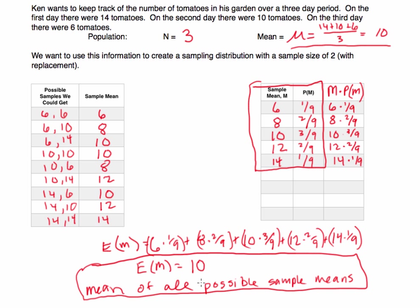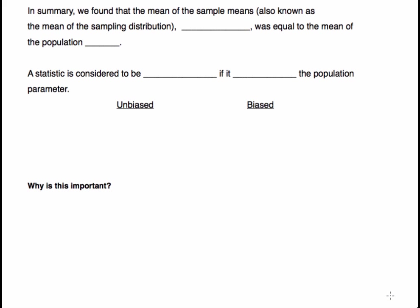To summarize: we found the mean of the sample means, which is also called the mean of the sampling distribution. The symbol for this is mu sub x-bar — the mean of the sampling distribution for x-bar, representing the mean of all sample means. We found that this was equal to the population mean. We would say that x-bar is unbiased.